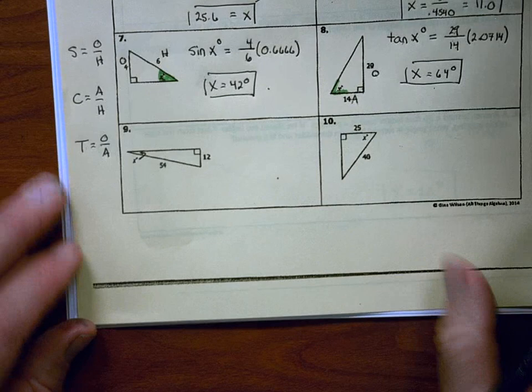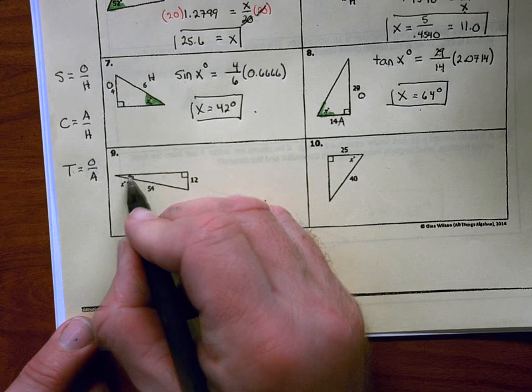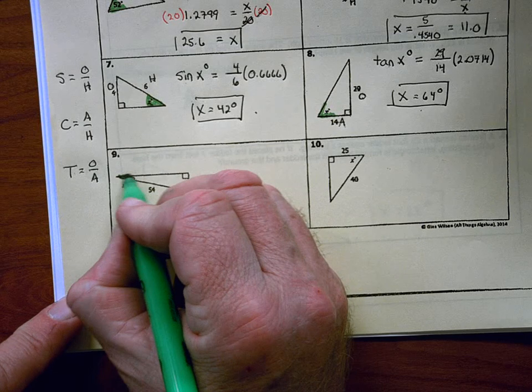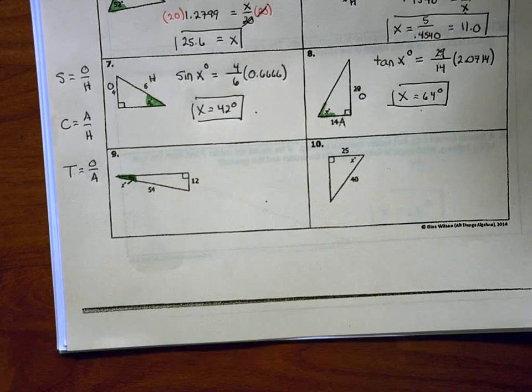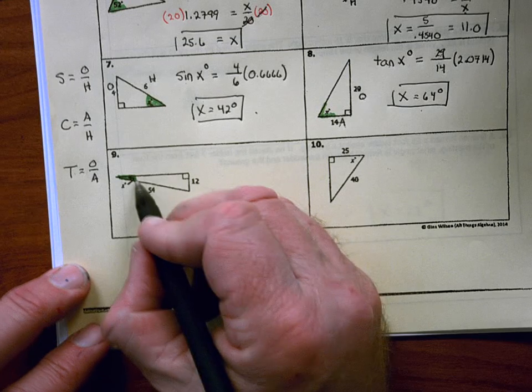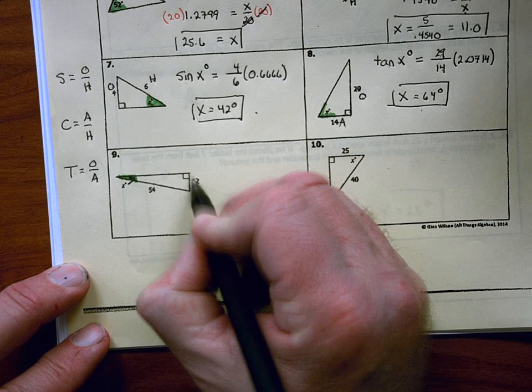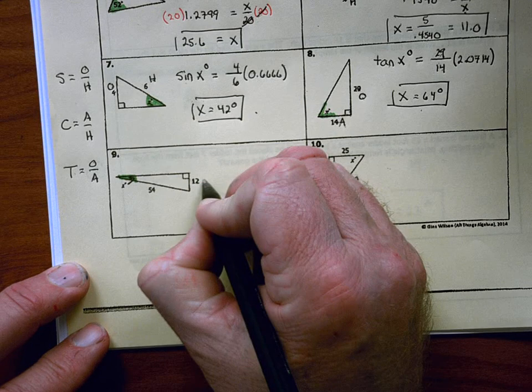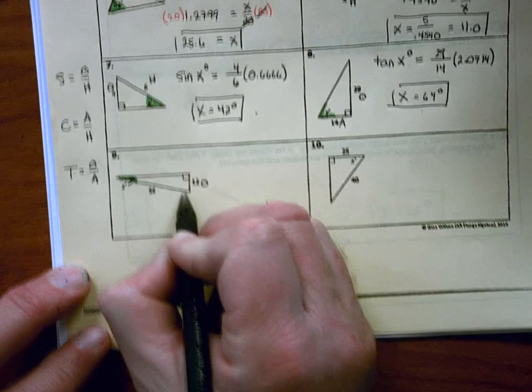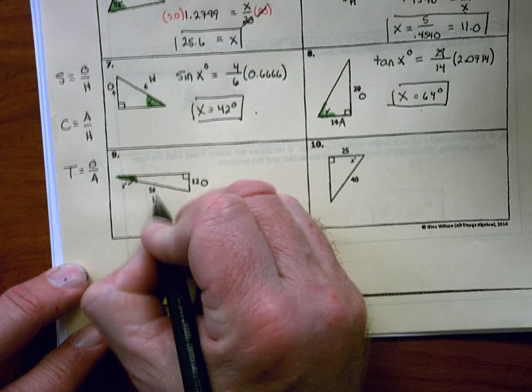Okay, number 9, we're going to follow the same idea as number 7 and number 8, because we are finding x. And x represents this little tiny angle right here. So that angle right there is going to be my theta angle, or my reference angle. Okay, so let's look at this side, 12. Well, that side is a leg, and it's opposite my theta angle. So I'm going to put an O there to tell me that it's opposite. And then the side where the 54 is, it's the hypotenuse, because it's across from the 90-degree angle. I'm going to put an H right there.